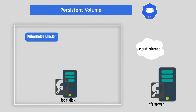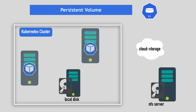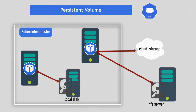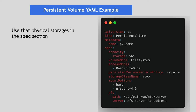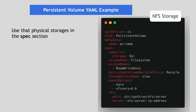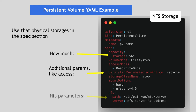You can have multiple storages configured for your cluster, where one application uses local disk storage, another uses the NFS server, and another uses some cloud storage — or one application may also use multiple storage types. By creating persistent volumes, you can use these actual physical storages. In the persistent volume specification section, you define which storage backend to use. This is an example using NFS storage backend, where we define how much storage we need and some additional parameters, like whether it should be read-write or read-only.